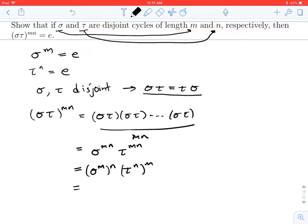But we already know that sigma to the m is equal to the identity. So this is the identity to the n. And tau to the n is equal to the identity. So this is the identity to the m. And of course, you can apply the identity as often as you like, and you still just get the identity.